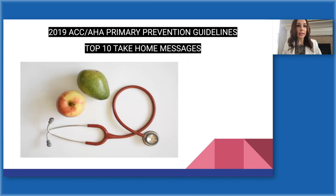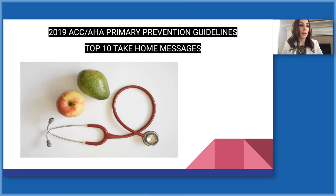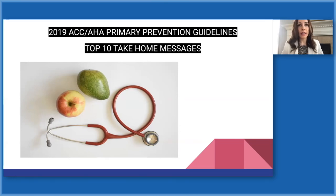In 2019, the American College of Cardiology and the American Heart Association came together and put out primary prevention guidelines for healthcare professionals and the public to reduce the burden of ASCVD. Primary prevention looks to prevent the onset of disease — what can we do now to prevent heart disease — versus secondary prevention, where you already have disease and are looking to prevent it from advancing. These are some of the key takeaways from those guidelines.